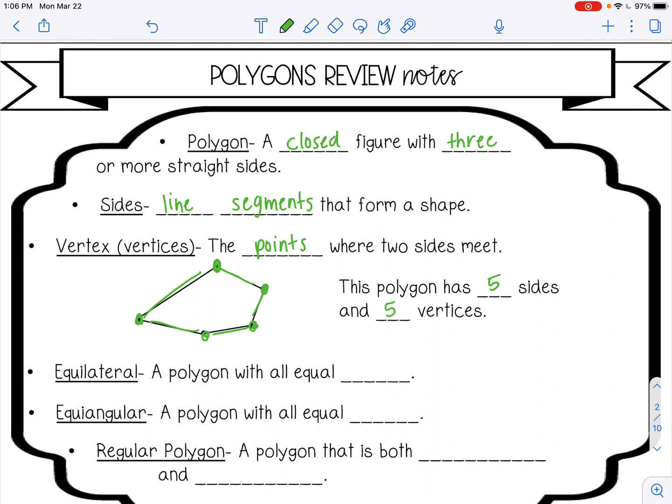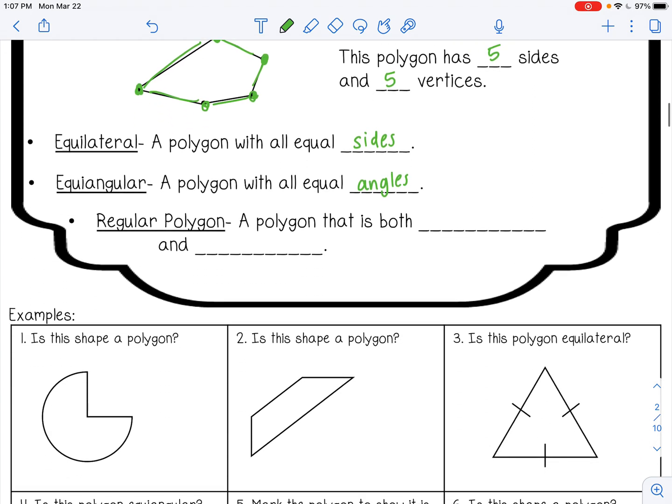A couple of words to describe polygons. Equilateral means a polygon with all equal sides. Equiangular means a polygon with all equal angles. A regular polygon is a polygon that is both equilateral and equiangular.